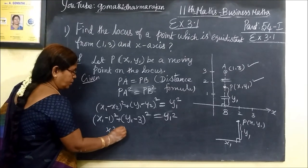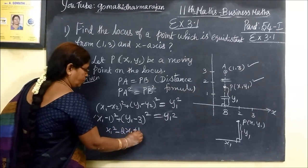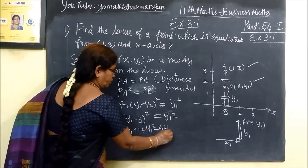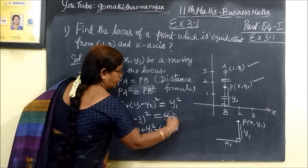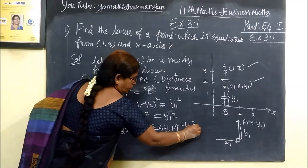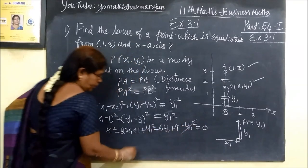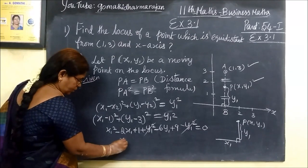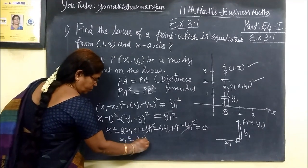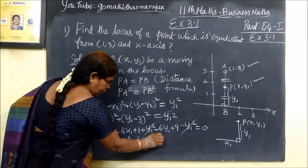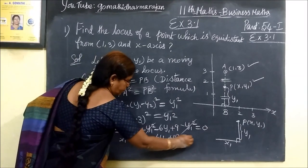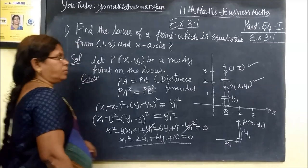So x1 square minus 2x1 plus 1, then y1 square minus 6y1 plus 9, plus y1 square minus y1 square equals 0. This is the cancel item. So x1 square minus 2x1 minus 6y1 plus 10 equals 0.